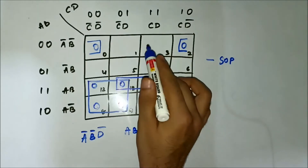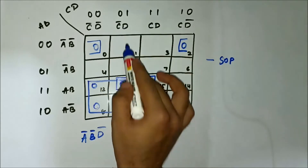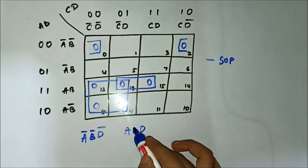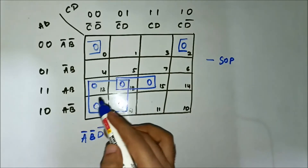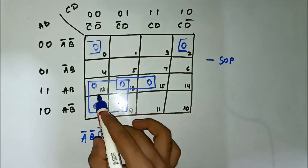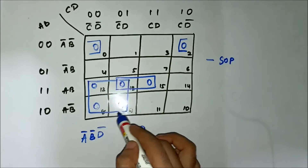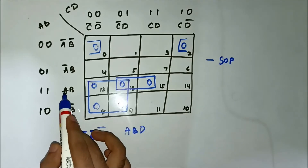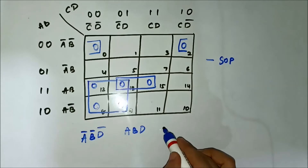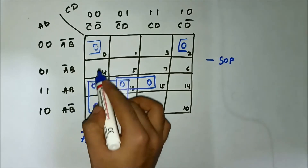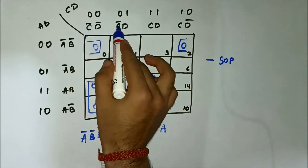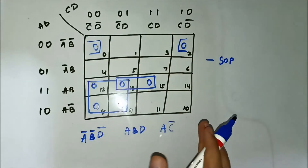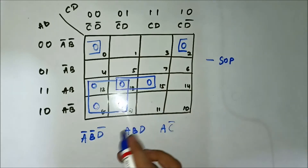In the vertical side we have D common in these two cells, so D will be there for the pair of cells 13 and 15. Next, for this quad involving cells 12, 13, 8, and 9: in the horizontal side we have A common, and in the vertical side we have C-bar common. So we have identified all the common variables.